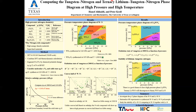In summary, we investigated the pressure-temperature phase diagram of tungsten nitrogen, rationalized high-pressure experiments to synthesize new tungsten nitrogen compounds, and studied the stability of the ternary system compared to the binary system. Thank you.